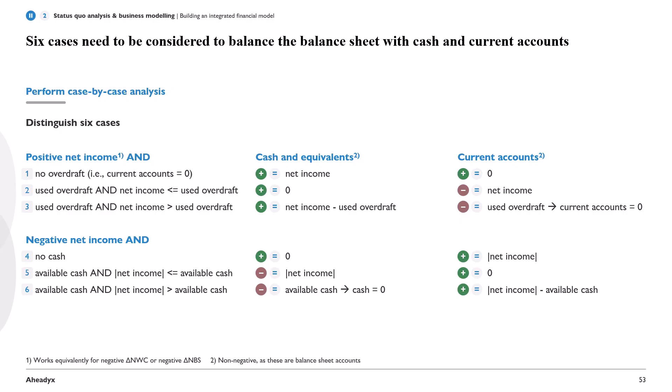Let's look at the fifth case: negative net income and available cash, where the absolute value of net income is less than or equal to available cash. This means cash and equivalents go down by the absolute value of net income, and there is no change in the counter-accounts — we had enough cash to cover the entire net income loss.